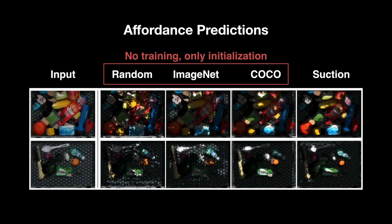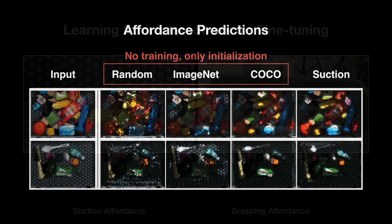Here we show the affordance maps predicted by different models. Without any training on the real robot, the affordance predicted by a segmentation model trained on the COCO dataset is already very similar to the output predicted by the converged affordance model trained with self-supervised learning for manipulation.